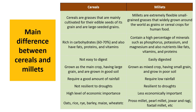The main difference between cereals and millets: cereals are grasses mainly cultivated for their edible seeds, while millets are extremely flexible small-grain grasses widely grown around the world. Cereals are not easy to digest, but millets are easy to digest. Please read the table carefully and note the important points and differences between cereals and millets.